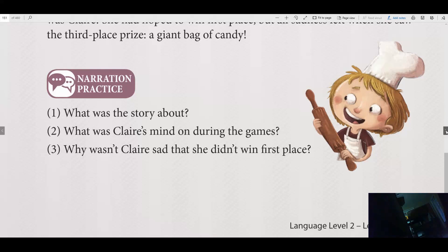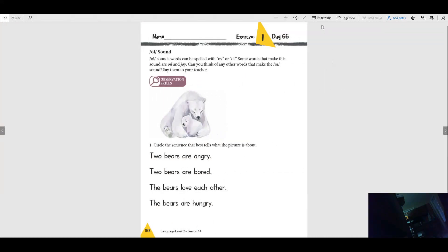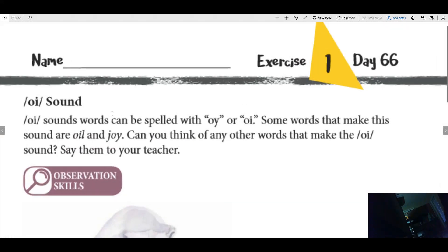All right, good deal. Let's look at our next page here. All right, we're going to learn a new sound this week. It's the oy sound. Oy sounds that they can be spelled with oy or oy. Some words that make this sound are oil and joy. Can you think of some other words that have the oy sound and say them out loud? Oy.